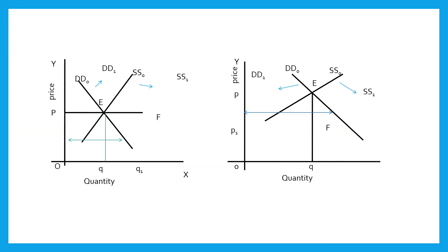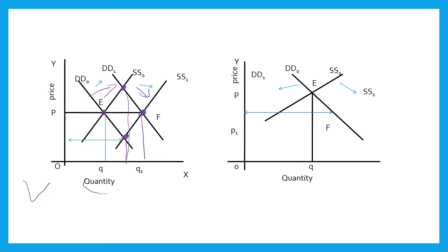Dear students, simultaneous shift in demand and supply can be understood with the help of a diagram. In the first diagram, demand is equal to supply at point E, the equilibrium position. When demand and supply shift towards the right side, the effect on quantity and price can be understood with the help of a diagram. When demand curve shifts towards the right side and supply curve also shifts towards the right side, the new equilibrium points are highlighted. All these new quantities are greater than the original quantity. That means when demand and supply shift towards the right side, quantity will increase.